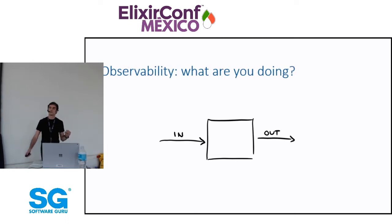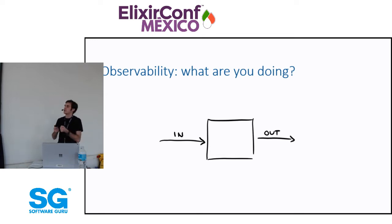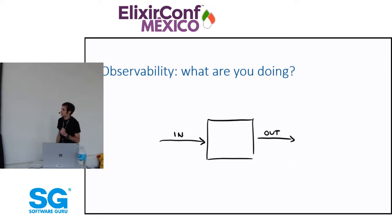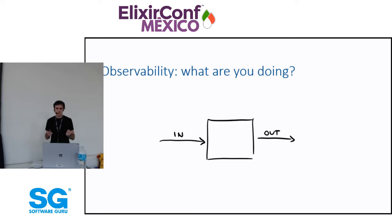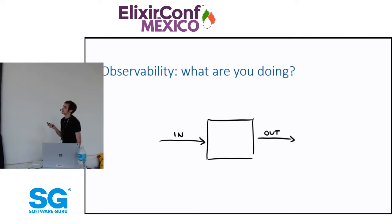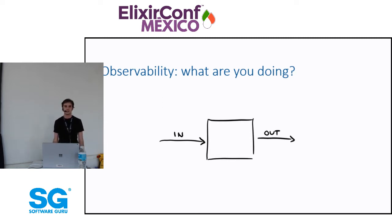Observability comes from control theory, where the idea is that if you have a simple control system — like a speed regulator on a car or flight stabilizer in an airplane — you can, by only looking at the output, figure out and infer the internal state of the system. When it comes to software, we can't really do that — our systems are too complex and too weird. The output might just be a page that says 500. We cannot figure out the internal state.